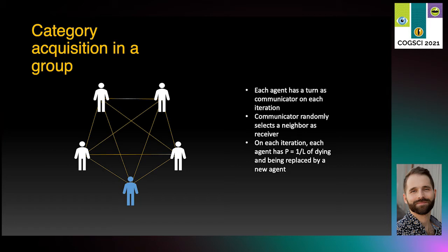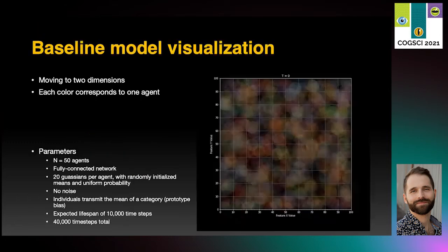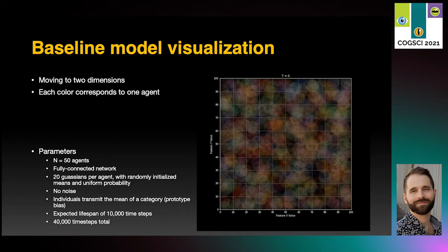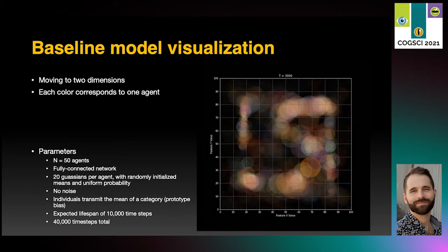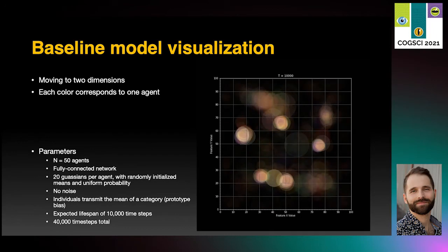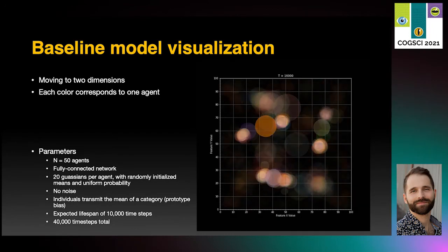Now I'll show you our baseline model in action. In the actual model, the Gaussian mixtures were two-dimensional rather than one-dimensional as in the schematic. Each color in this plot corresponds to one agent, and each agent has multiple categories. The transparency of the points represents the amplitude of each Gaussian. The categories start out randomly distributed but quickly begin to cluster. We can think of these as emergent cultural attractors forming.